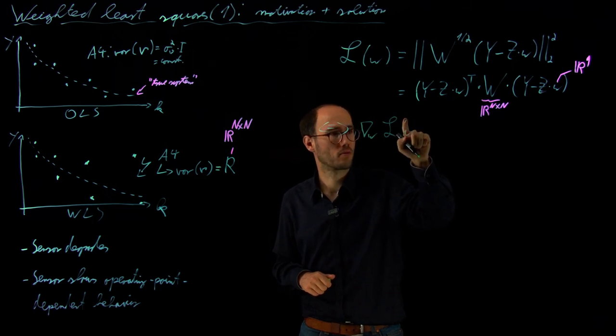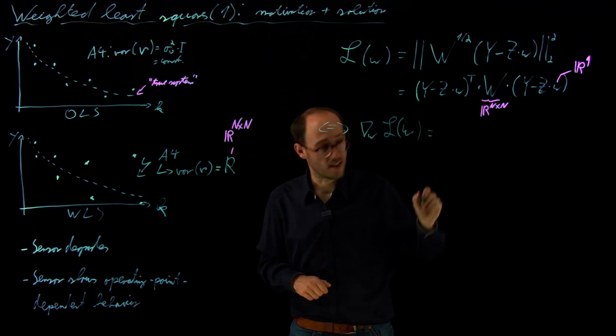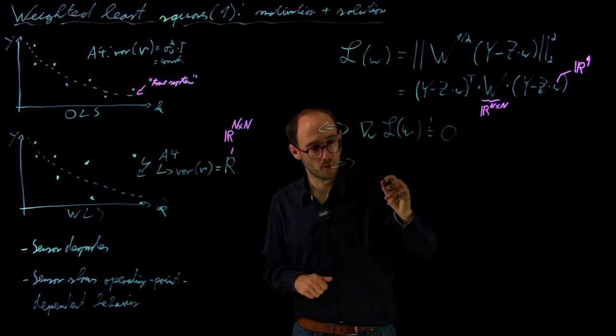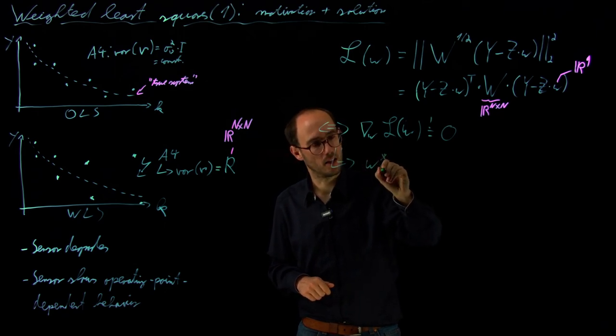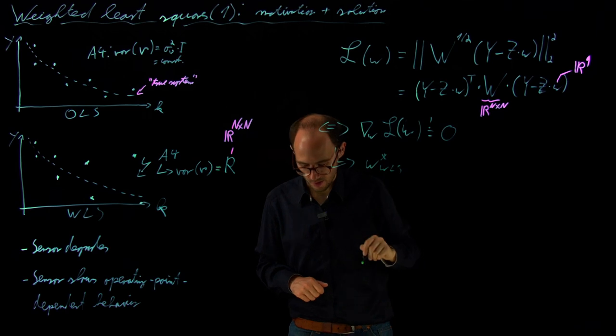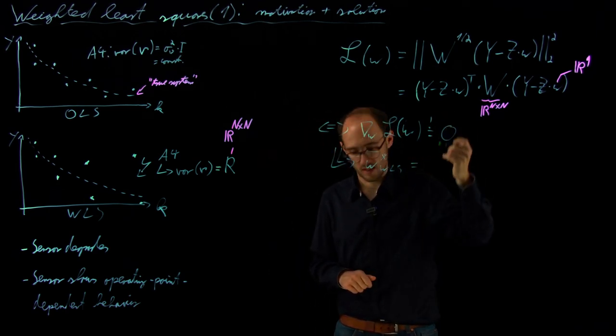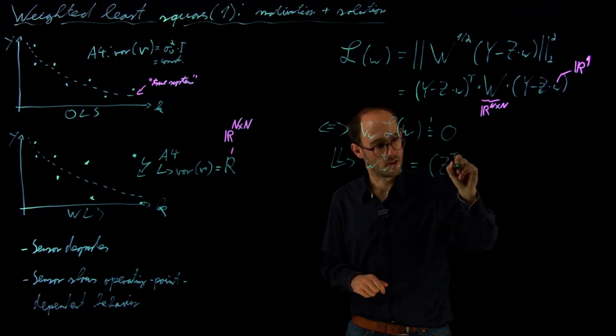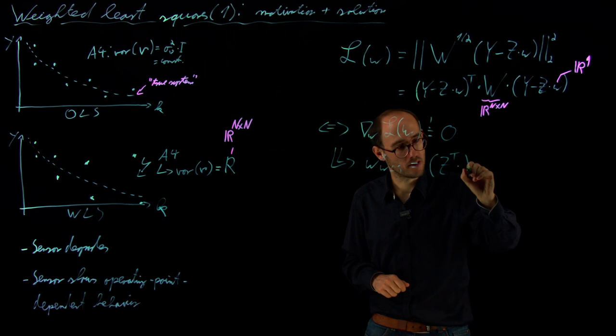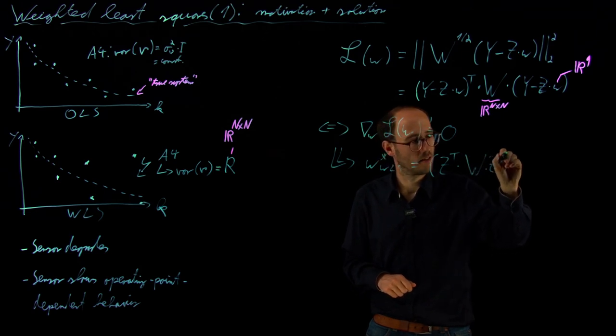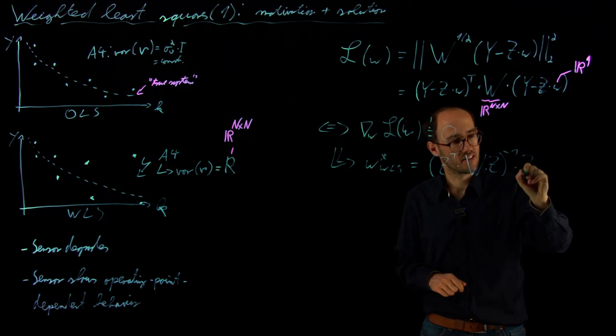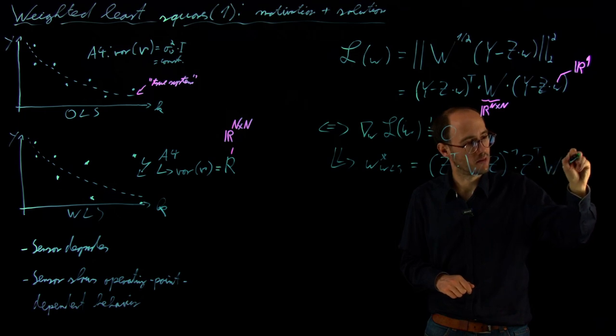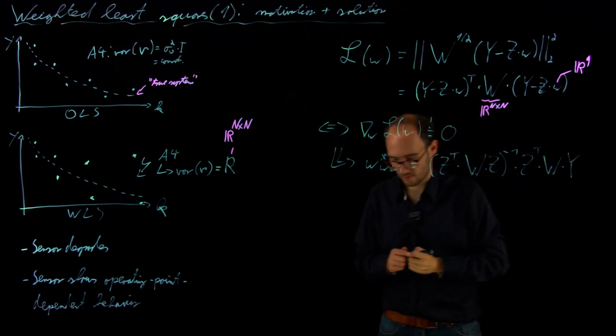And set that to zero, and what we get from that is our new solution, W star WLS for the weighted least squares, and if we follow the derivation as previously, what we will get as a solution is Z transpose times capital W times Z, inverse times Z transpose times capital W times Y.